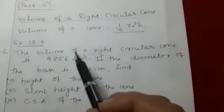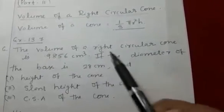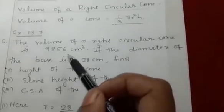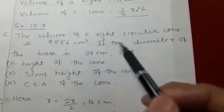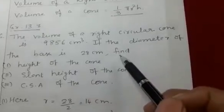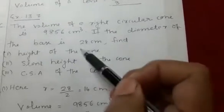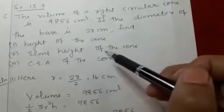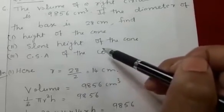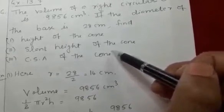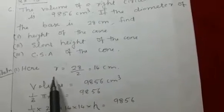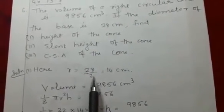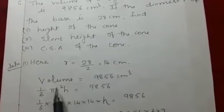Let's discuss the 6th question of exercise 13.7. The volume of a right circular cone is 9,856 cm³. If the diameter of the base is 28 cm, find the height of the cone, second the slant height of the cone, and third the curved surface area of the cone. Diameter is given, so first we will find out the radius: 28 divided by 2 is equal to 14 cm. Volume is given.